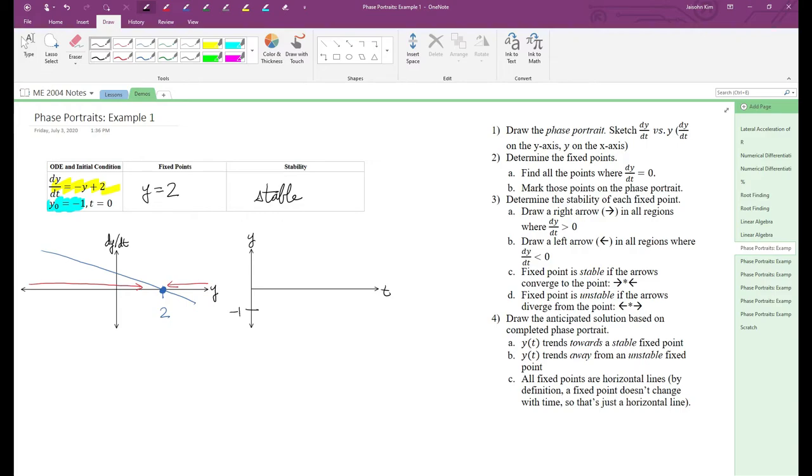And let's also plot the fixed point. If you recall, we plot the fixed point as a horizontal line because the definition of a fixed point states that the derivative is 0 at the point, which is just a horizontal line. Our fixed point is y equals 2, so that's where we draw the horizontal dotted line.